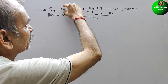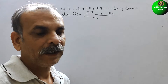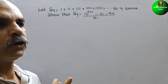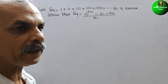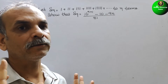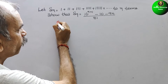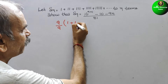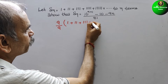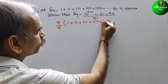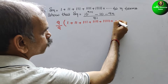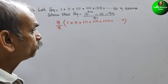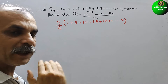First, we have to make this into a recognizable sequence — it may be in AP or it may be in GP. To do that, we multiply and divide by 9. So we write (1/9) times the sum: 1 plus 111 plus 111 plus 1111 plus so on up to n terms, then multiply through in the numerator.